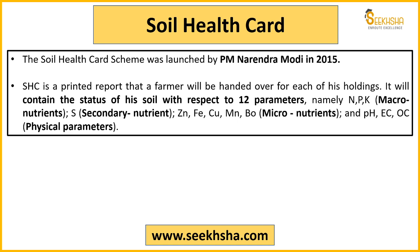12 parameters jo iske andar aate hain: macro nutrients mein NPK — nitrogen, phosphorus, potassium (3). Secondary nutrients mein sulfur (1). Micronutrients mein zinc, iron, copper, manganese, aur boron (5). Physical parameters mein pH, EC, OC (3). Total: 3+1+5+3 = 12 parameters.